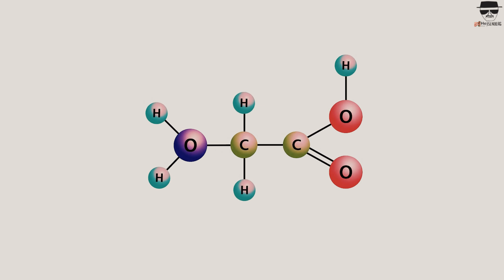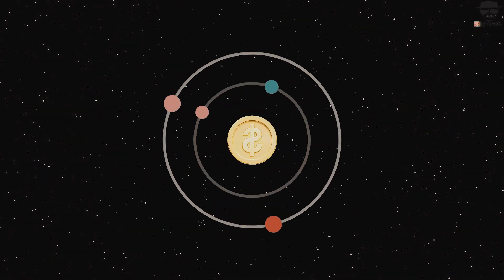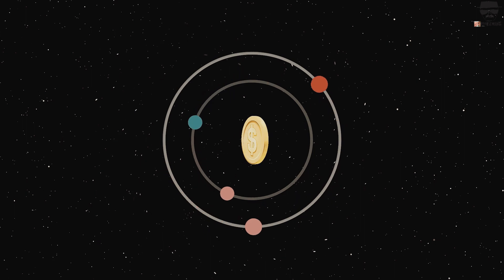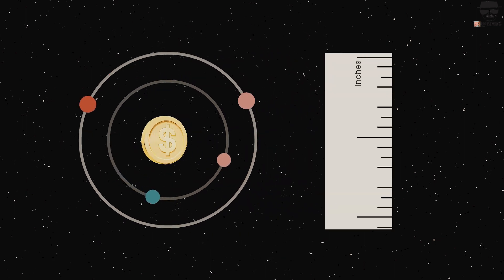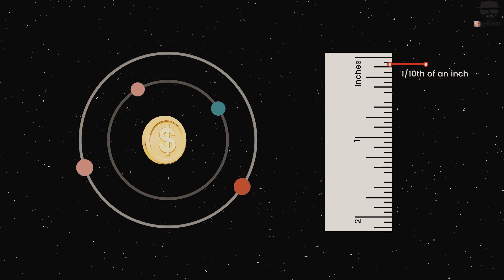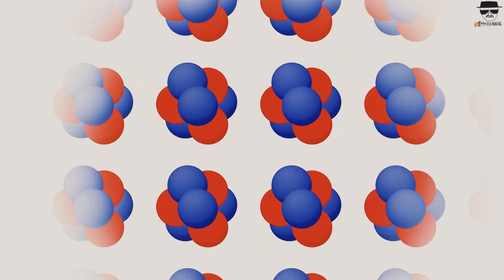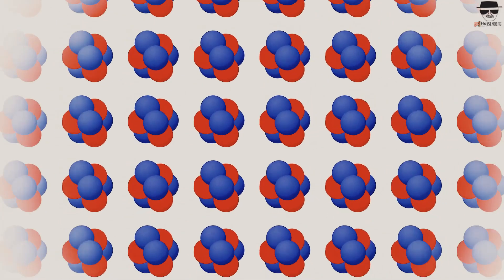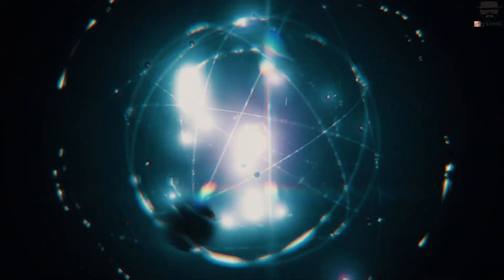Atoms are incredibly small compared to everyday objects like grains of sand or pebbles. They measure less than one millionth of a millimeter in diameter. To give you an idea of how small atoms are, imagine if a penny was enlarged to the size of the observable universe. At that scale, an atom would only measure about one-tenth of an inch across. Yet, there are billions upon billions of atoms packed into every single object we see around us, even right now.